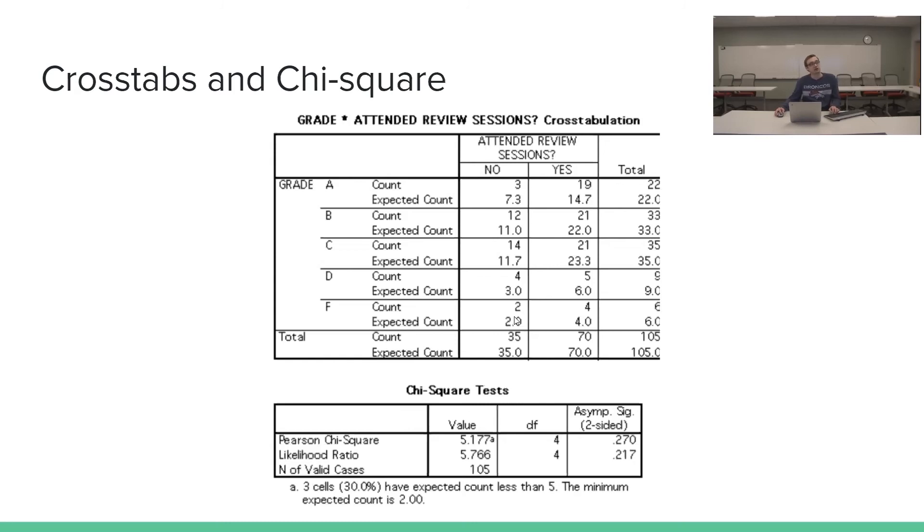And so to correct for this, we would combine several of the small ones together. So for example, this D and F column, these two rows, we would probably combine into just a low grade level so that we can meet this assumption of having enough counts in each of our blocks.